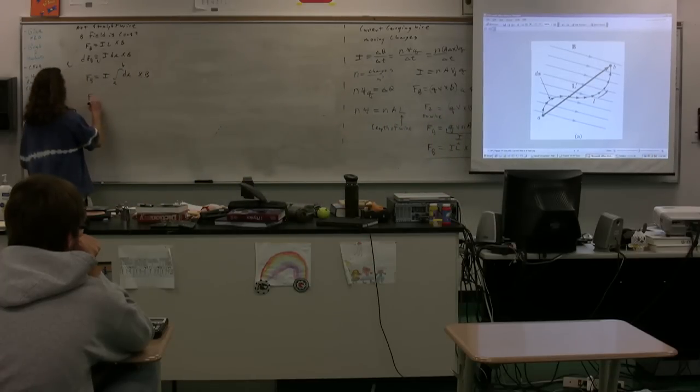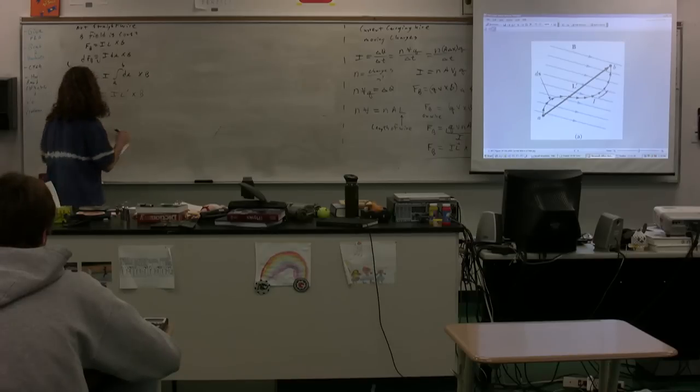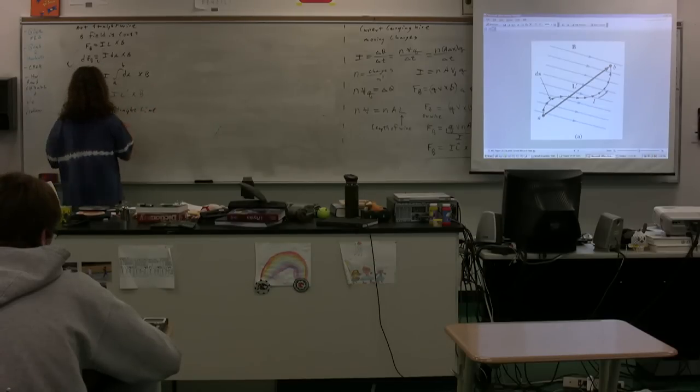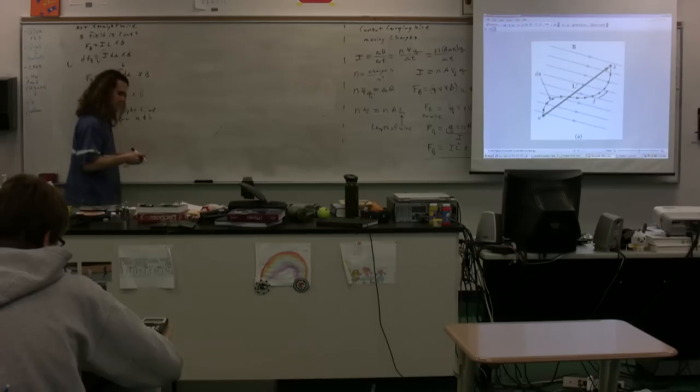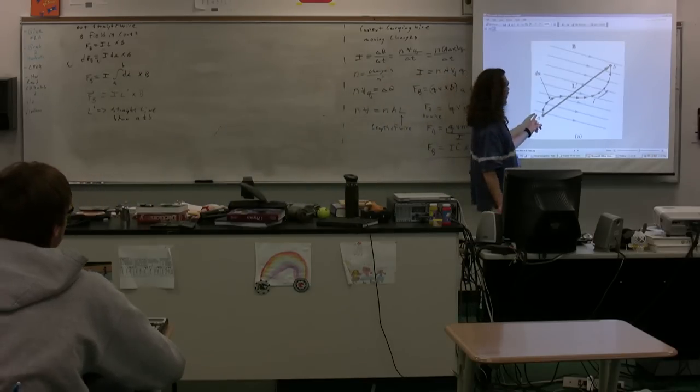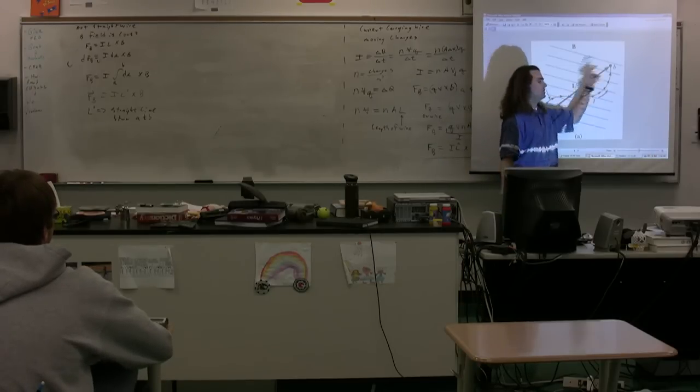The magnetic force would be equal to I times L' cross product with the magnetic field. So L' is defined as the straight line between A and B, and L' is essentially the vector sum of all of these ds's.